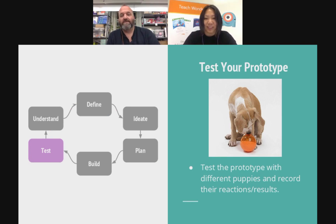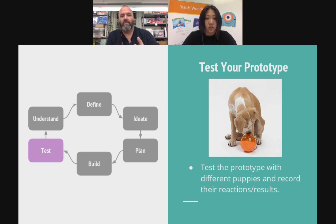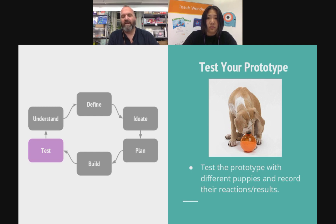The next phase is testing your prototype. We've got a food toy, and I might test it to make sure the food fits in there, but obviously I want to use the audience it's geared towards — I want to put this in front of puppies and see how they react. It's really important that you record those reactions and results, whether positive or negative, because both types of information will help you reiterate and come up with a better plan. Go in with open eyes, and also get other people to do the observations too. You might miss what is working if you go in assuming it's going to fail.